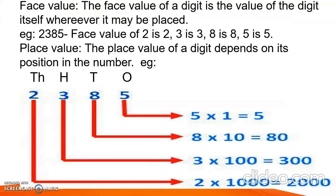Face value. The face value of a digit is the value of the digit itself, wherever it may be placed. For example, in the number 2385: the face value of 2 is 2, the face value of 3 is 3, the face value of 8 is 8, and the face value of 5 is 5.